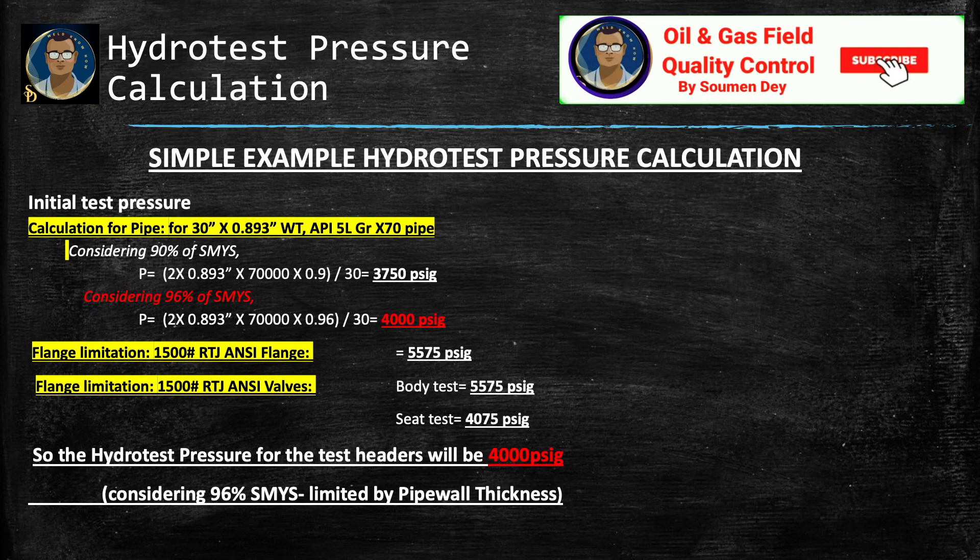Initial test pressure — sample example for hydrostatic test pressure calculations. Today we will be taking an example of a 30-inch, 0.893-inch wall thickness, API 5L Grade X70 pipe.